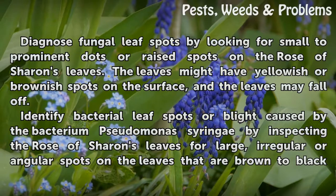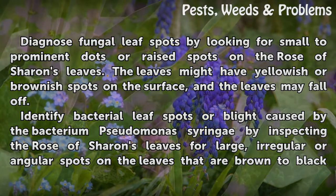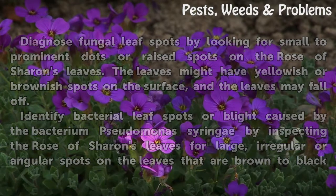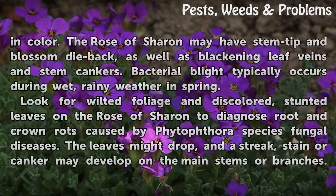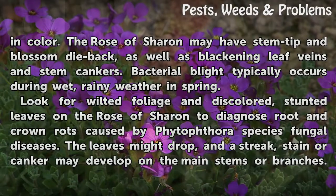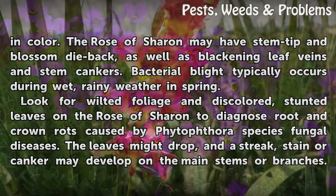Identify bacterial leaf spots or blight caused by the bacterium Pseudomonas syringae by inspecting the Rose of Sharon's leaves for large, irregular or angular spots on the leaves that are brown to black in color. The Rose of Sharon may have stem tip and blossom die back, as well as blackening leaf veins and stem cankers. Bacterial blight typically occurs during wet, rainy weather in spring.